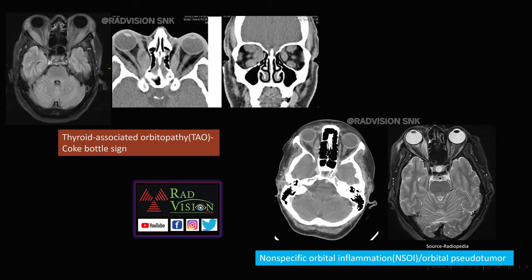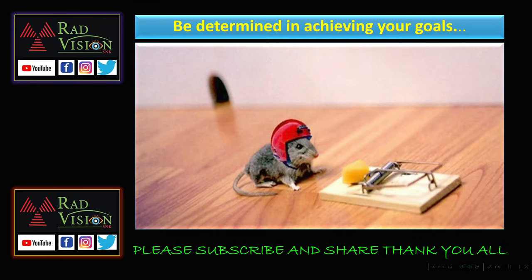Next is thyroid-associated ophthalmopathy, showing enlargement of the extraocular muscles — bulky muscles with sparing of the tendon insertions — giving the classical Coke bottle sign. This is a case of orbital pseudotumor with thickening of the medial rectus muscle, commonly referred to as non-specific orbital inflammation. Thank you all.